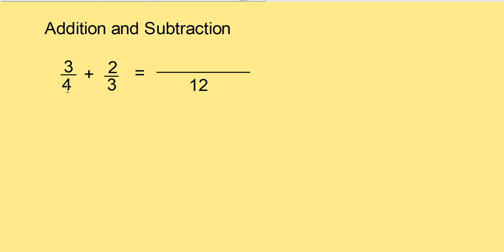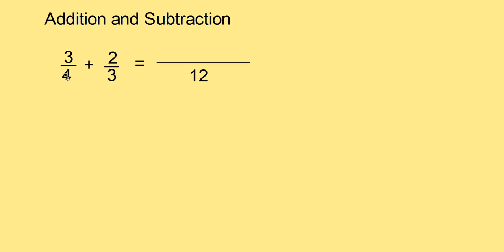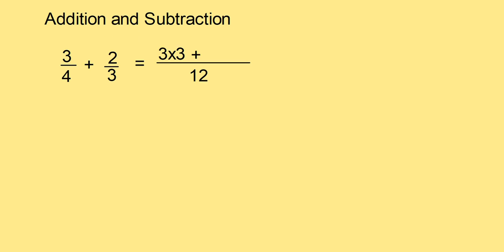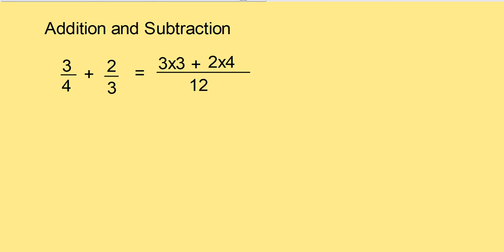Now check how many times the denominator of 4 goes to 12. 4 into 3 is 12. So multiply that 3 with the numerator. Then we get 3 into 3. Plus, how many times 3 goes to 12? 3 fours are 12. So multiply 4 with the numerator 2. We get 2 into 4. Now simplify.